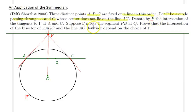And let gamma meet the segment PB at Q. So when we draw the segment PB with a different color, we know that point here will be Q. And we would like to prove that intersection of the bisector of angle AQC...